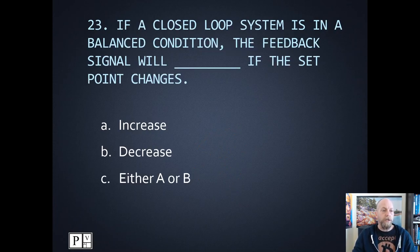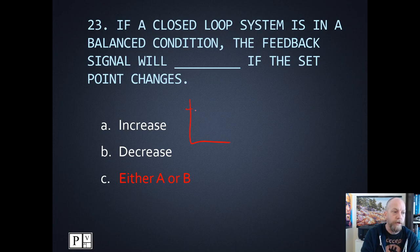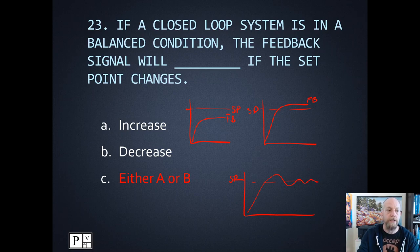Number twenty-three: if a closed loop system is in a balanced condition or equilibrium, the feedback signal will increase or decrease if the set point changes. We have no idea what's going on in the field, so it's going to either increase or decrease. It depends on whether the feedback signal is below or above the set point. The system might oscillate above and below the set point, adding and subtracting trying to settle down. When we get into advanced, we'll talk about PID — proportional, integral, derivative — algorithms that determine the output. It could be either one.